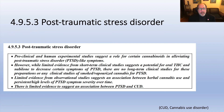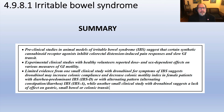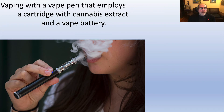We'll talk about post-traumatic stress disorder and how cannabinoids may help ameliorate some symptoms, though in certain situations they may also cause problems. We'll cover inflammatory skin diseases — dermatitis, psoriasis, pruritus — and irritable bowel syndrome, where there have been some dramatic clinical successes. Toward the end of the course, we'll talk about adverse effects, including vaping — which can be used medicinally but has caused serious problems and even deaths when products from the black market contain harmful substances.